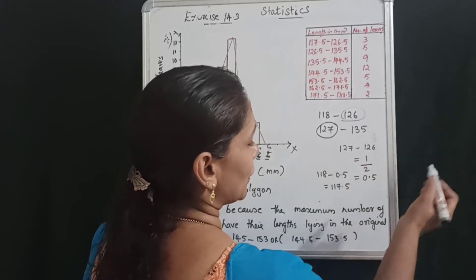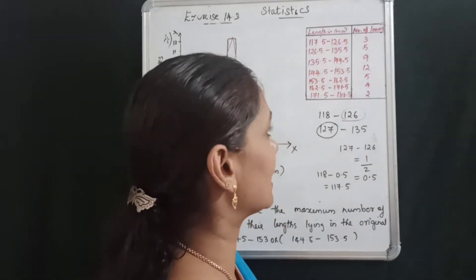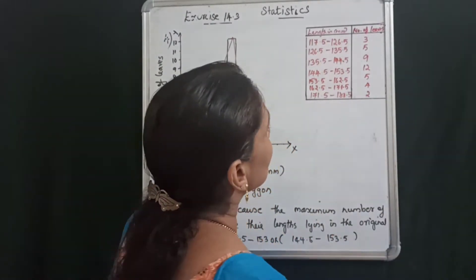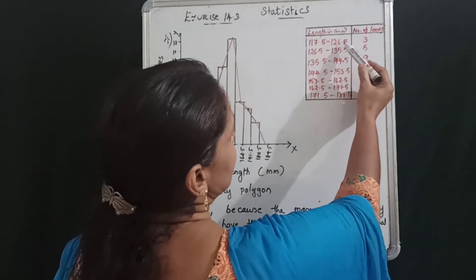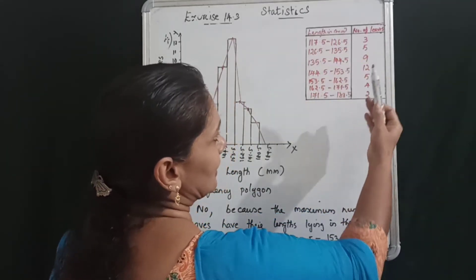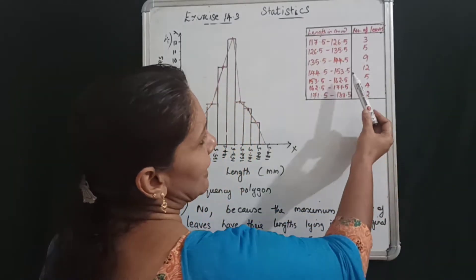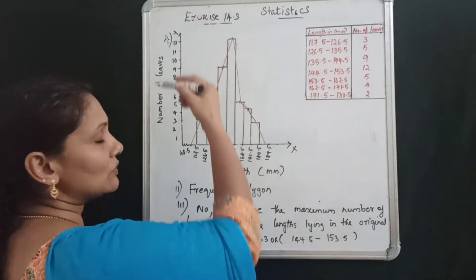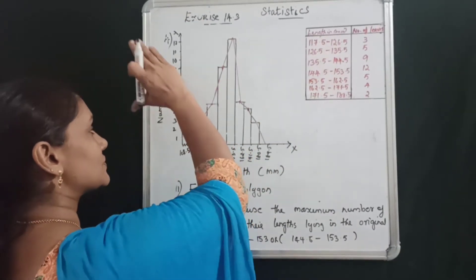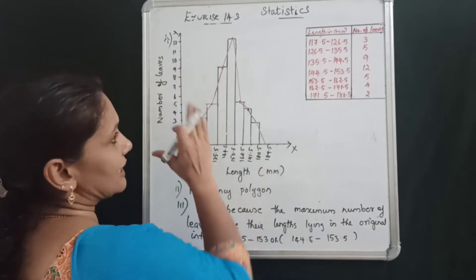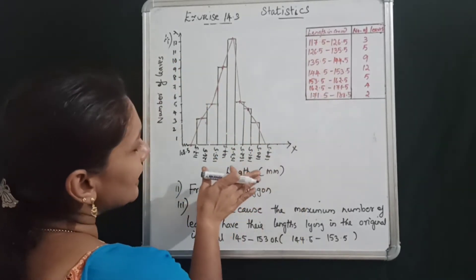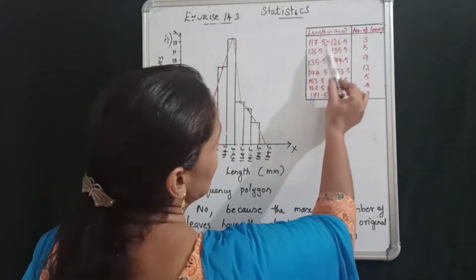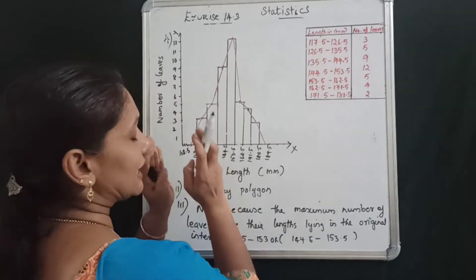We have to construct a histogram. The number of leaves is on the y-axis and the length is on the x-axis. We use continuous class intervals. This is a histogram with no gaps between the bars. The maximum frequency value is 12.